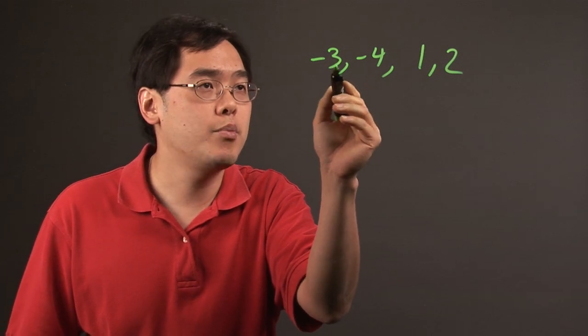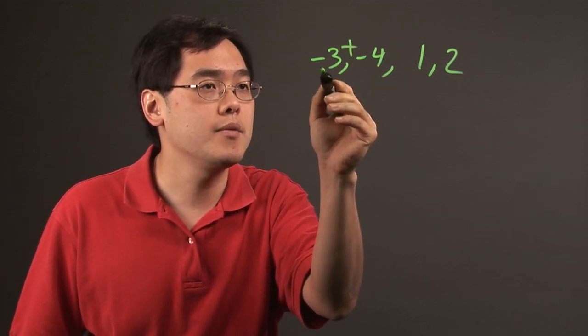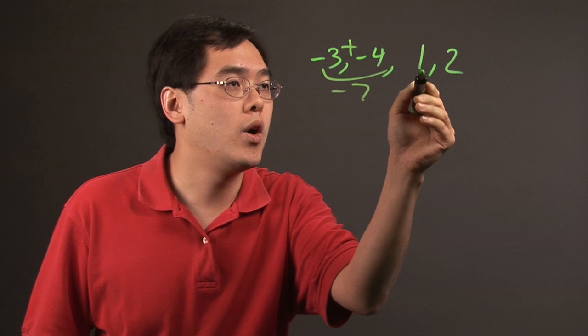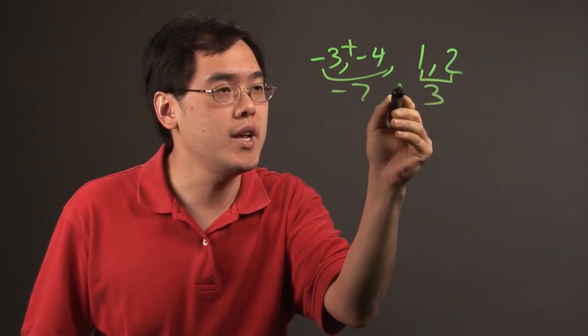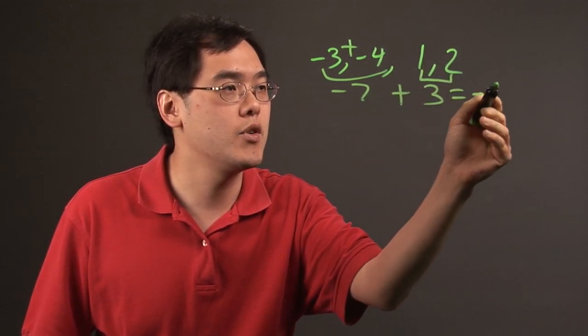So negative 3 plus negative 4, that's going to be negative 7. 1 plus 2, that's going to give you 3, and negative 7 plus 3 is going to give you negative 4.